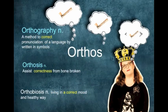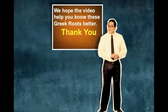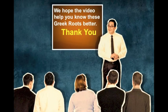Finally, the last root is orthos. Orthos means right and correct. Orthography is a method to correct the pronunciation of a language by writing it in symbols. Orthosis is the method to assist correctness from a broken bone. We hope that the video helped you know these Greek roots better. Thank you.